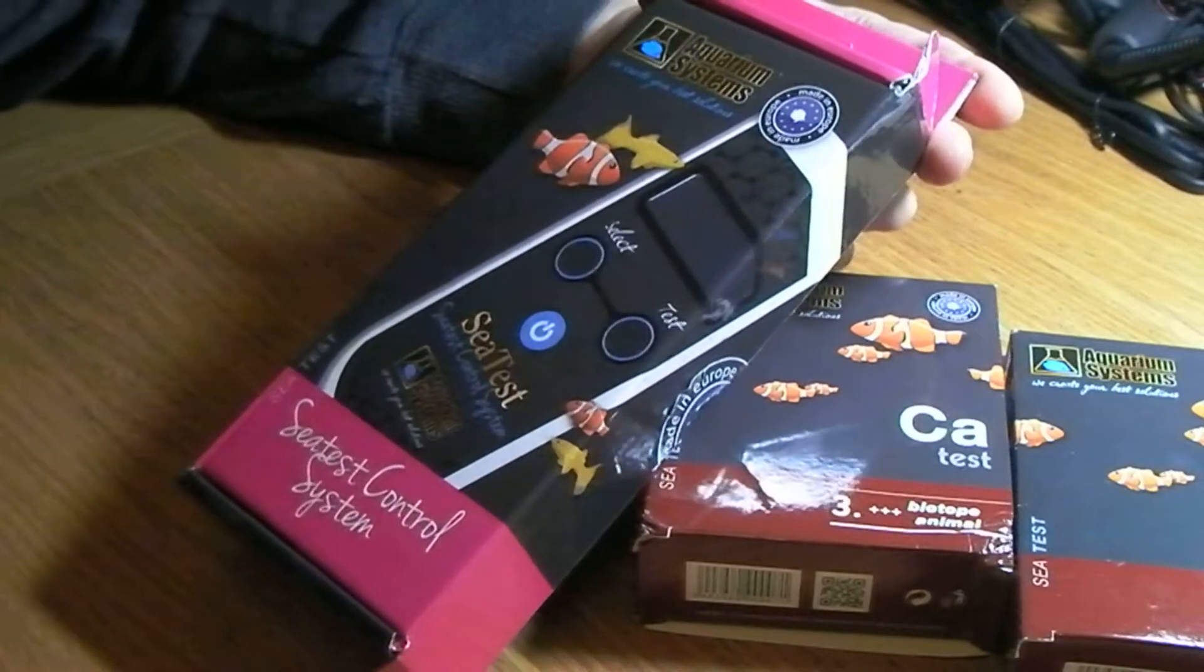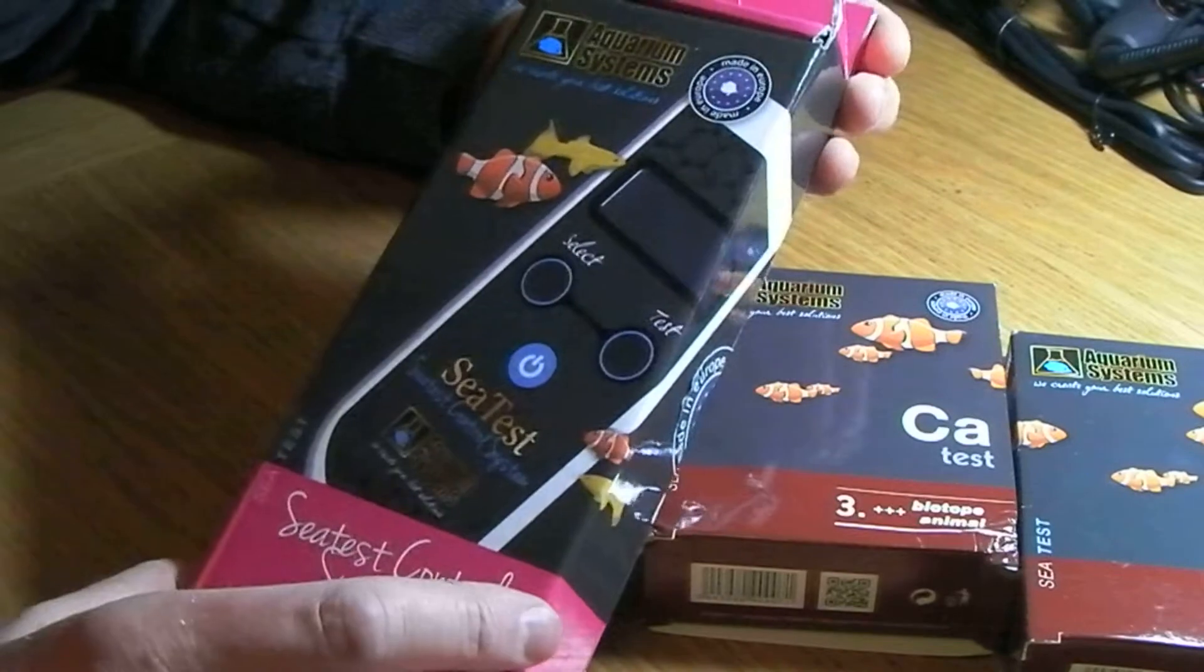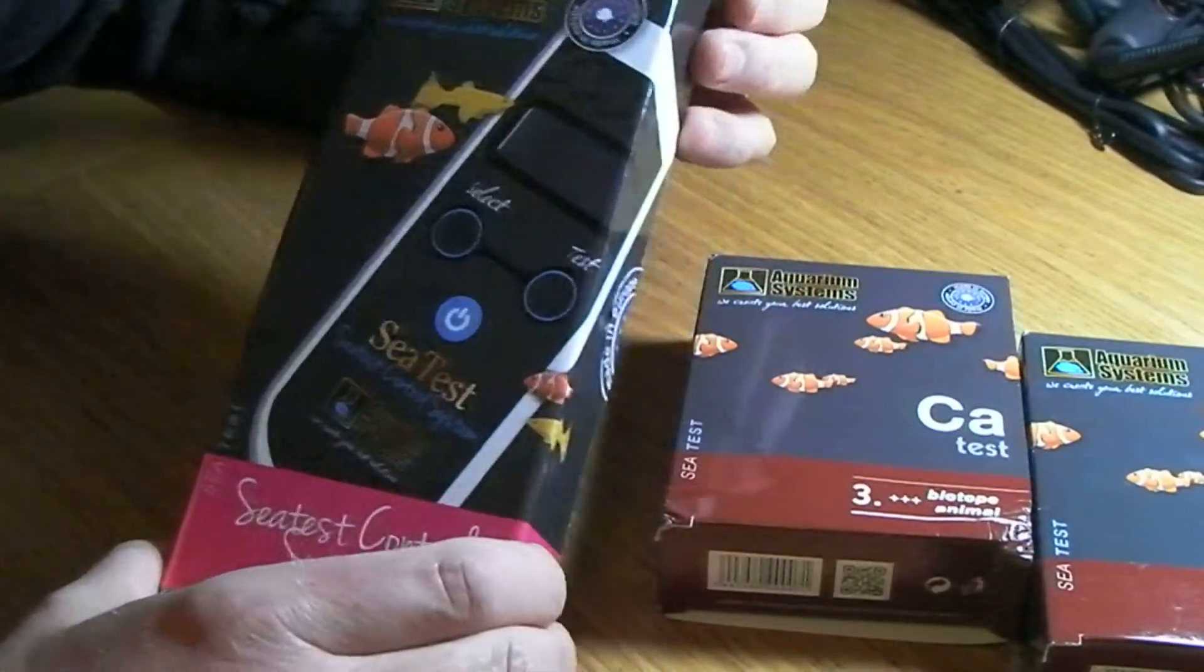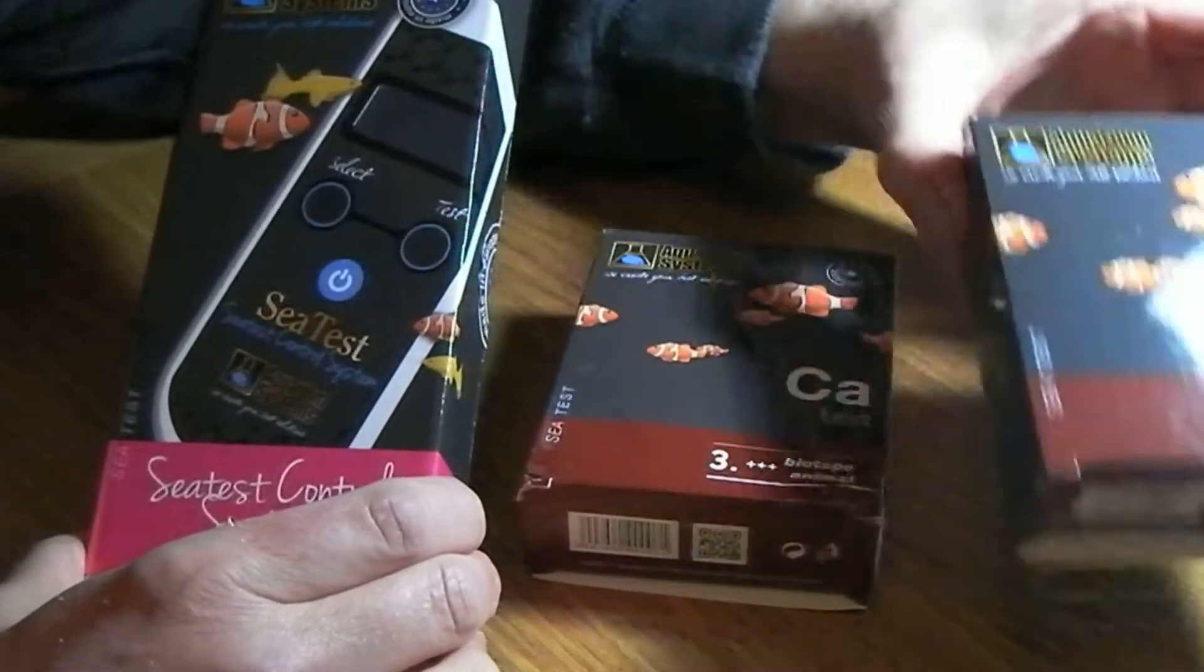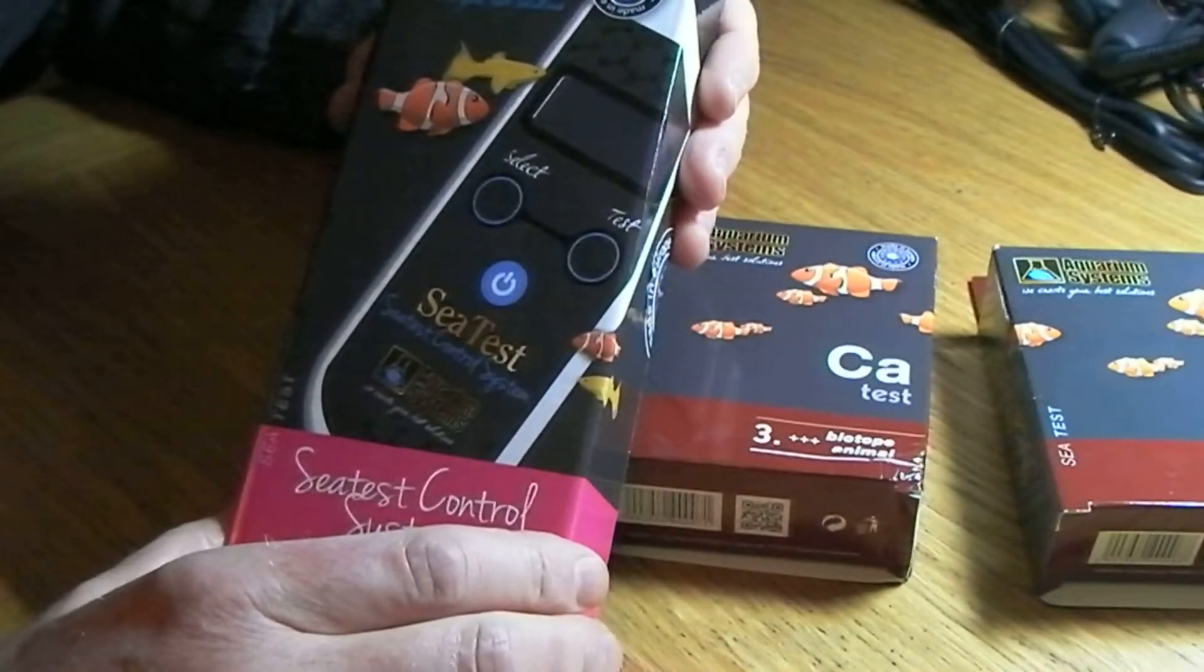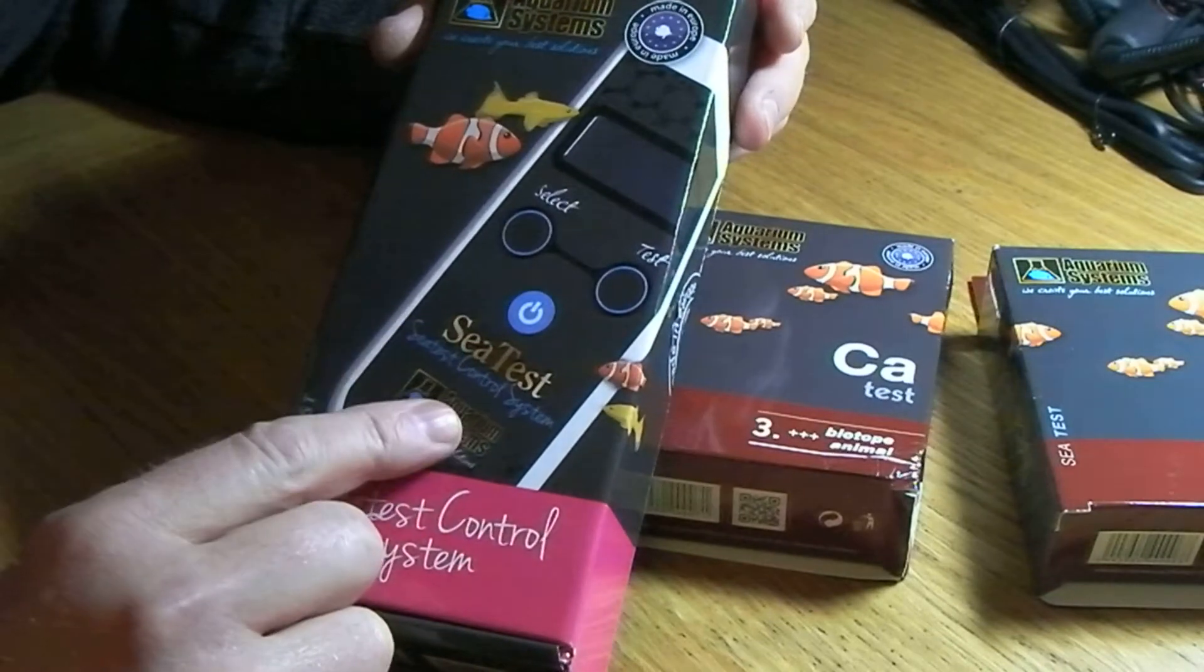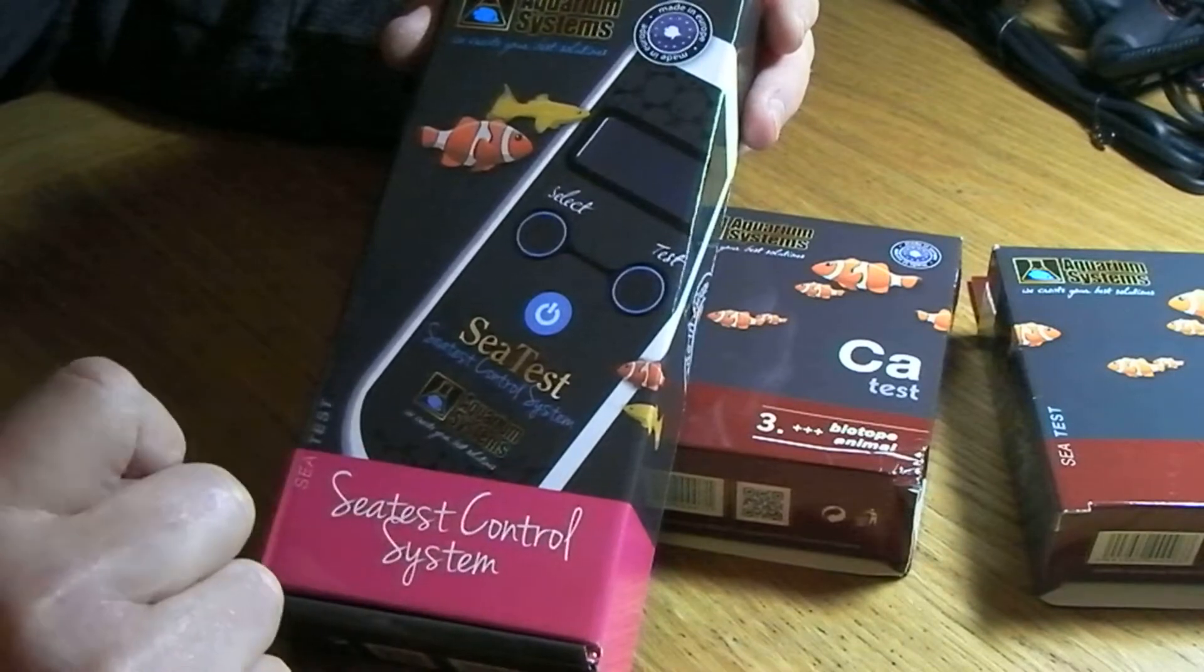It's called the C test control system and it's by a French company. The product's actually made in Europe as well. What you use it in conjunction with various C test test kits, and you dip the end of the device into the resulting colored water and it gives you an LCD measurement.